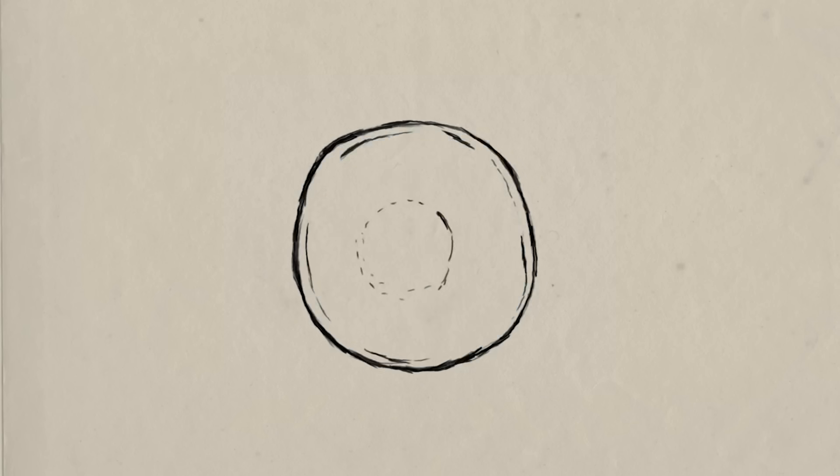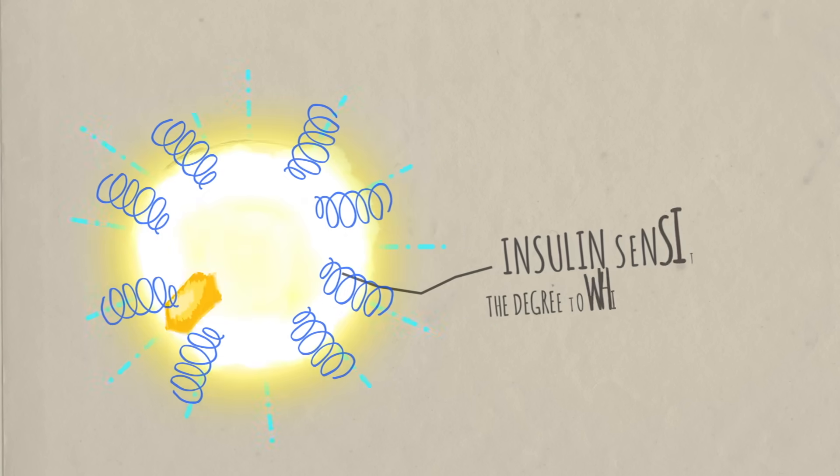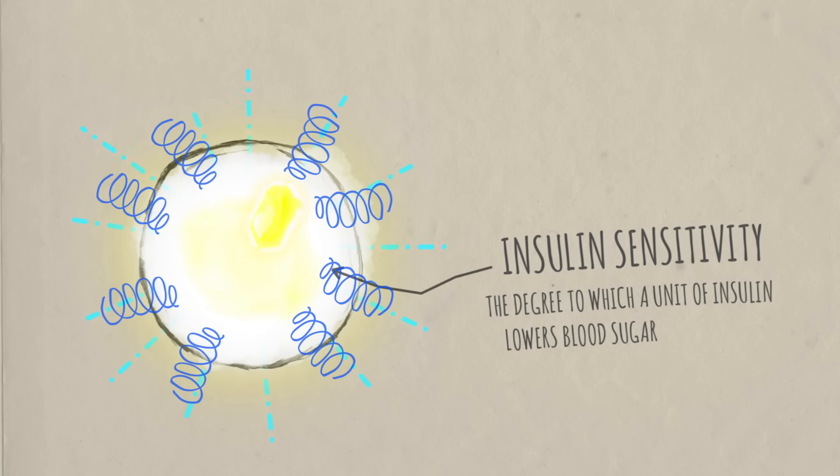The degree to which a unit of insulin lowers the blood sugar helps us understand something called insulin sensitivity. The more a given unit of insulin lowers blood sugar, the more sensitive you are to insulin.